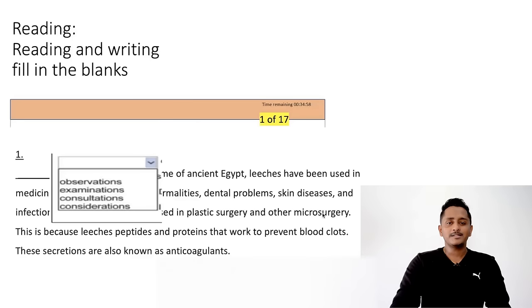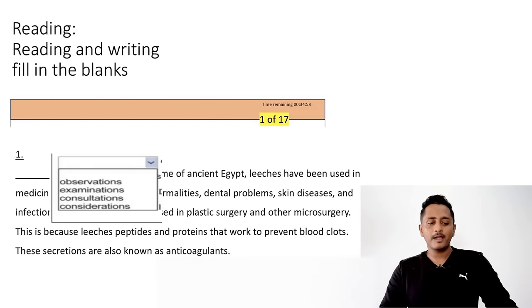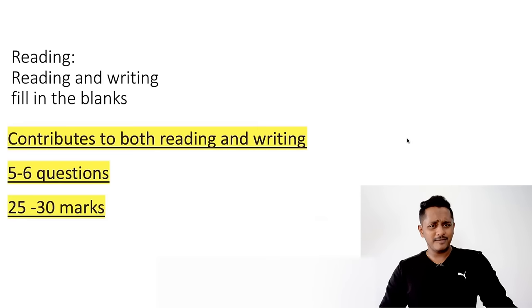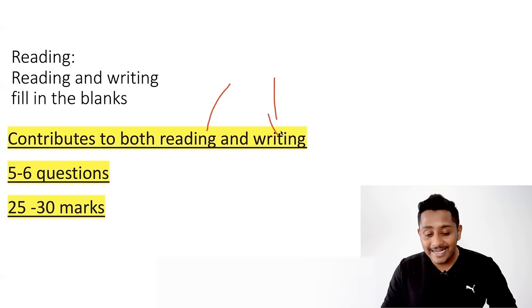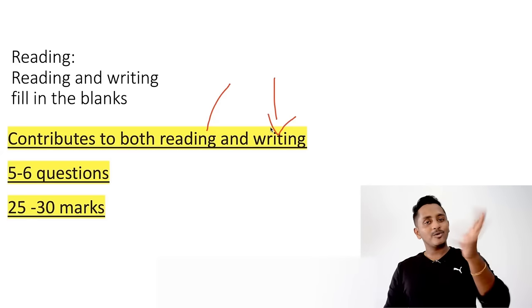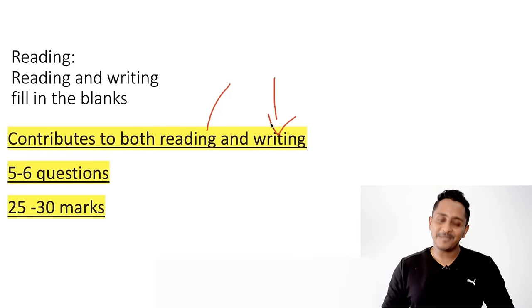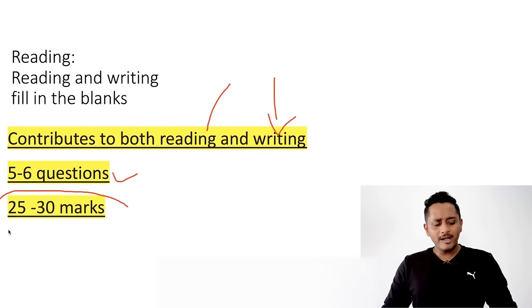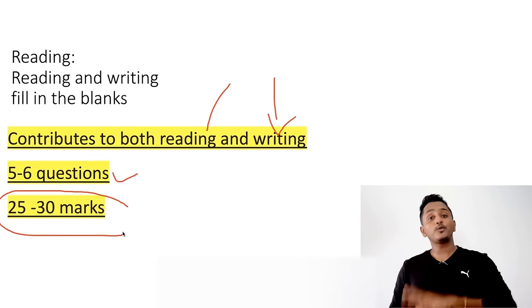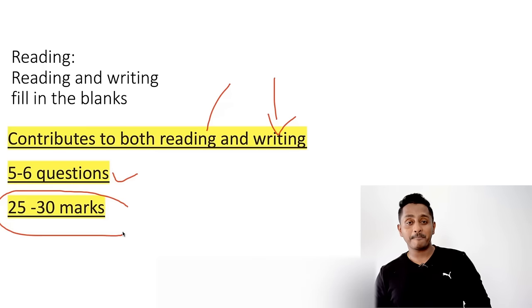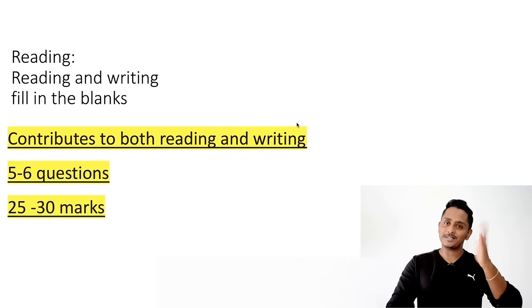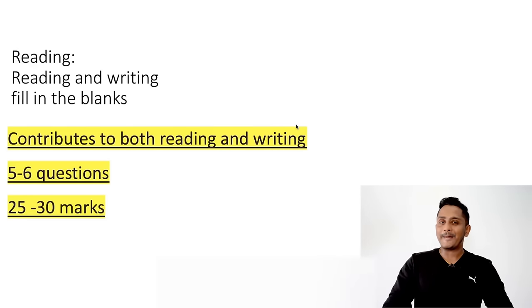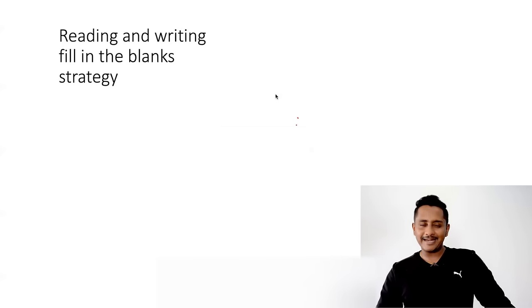So what comes in reading writing fill in the blanks: each blank is given four options and you need to select one. This module contributes 25 to 30 marks towards your reading and 25 to 30 marks towards your writing — that's 50 to 60 marks total from just five or six questions. We have every reason to study this module in depth.